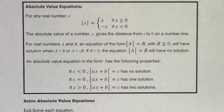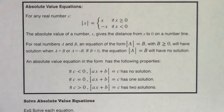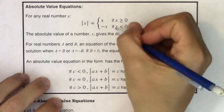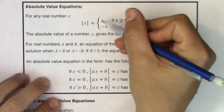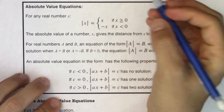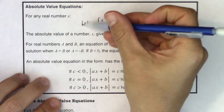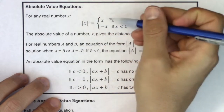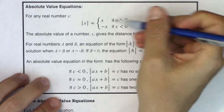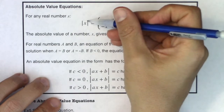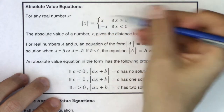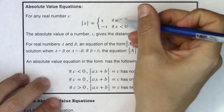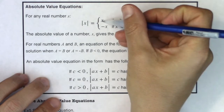Let's take a look at absolute value equations. I'm not sure if you've ever seen the absolute value function defined as a piecewise function — it looks weird, but let's chat about it. What this is saying is when you see the absolute value of x, if the number inside those absolute value symbols is positive, keep it positive.